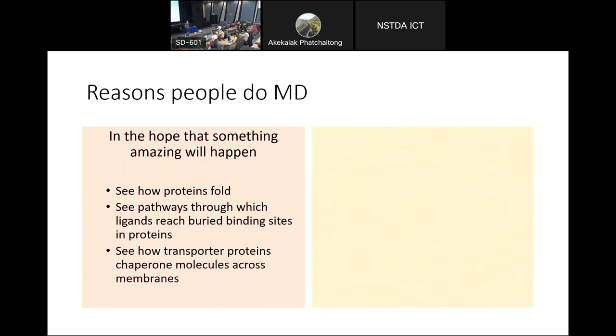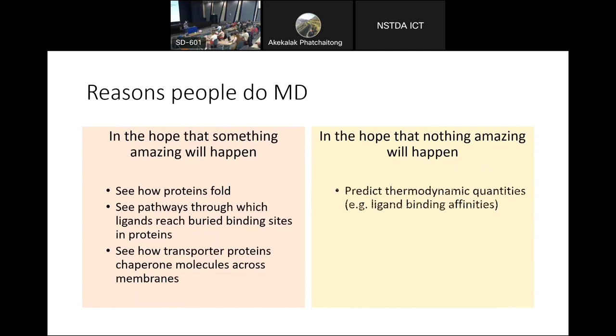So the second set of reasons why people do MD, strange enough, is in the hope that nothing amazing will happen at all. This may sound a bit weird. But what we're talking about here, actually, is the use of molecular dynamics simulations to predict thermodynamic quantities. So, for example, very importantly in the pharmaceutical industry, the binding affinities of ligands to proteins. So a large amount of computer power is being burnt up around the world on both academic and commercial supercomputers, basically trying to solve that problem on the right-hand side.